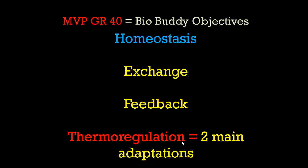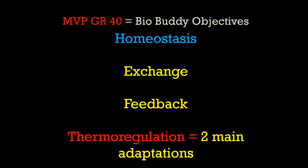Key highlights for GR40: homeostasis — that balance of getting things in and out while exchanging them to stay alive. Negative feedback is the main way we control that. Thermal regulation has two main adaptations: ectotherms, which use the outside environment to control their temperature, and endotherms, which turn food into the heat that runs their body. The larger you are, the more efficient — but it's all about surface area, as everything in biology is.